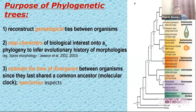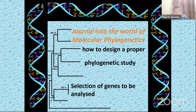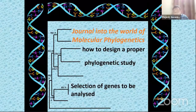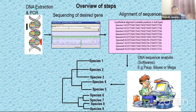Let me take you very quickly on a journey into the world of molecular phylogenetics and tell you a little bit about how, if ever you want to design a phylogenetic study — whether you're studying plants or any types of microbes — what precautions you can take and how you can plan your phylogenetic study. This is an overview of the steps. Once you have your sample — it could be a plant sample, fungal sample, or bacterial sample — you go ahead with DNA extraction and then PCR.